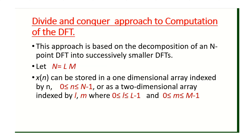Now let us consider that the signal has N number of samples. We write N as a product of two numbers: N equal to L times M, where 0 is less than l less than L minus 1 and 0 is less than m less than M minus 1. By this approach, we can store the elements in a two-dimensional form, either row-wise or column-wise. In this video, we are going to use row-wise representation.